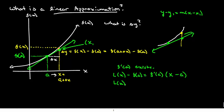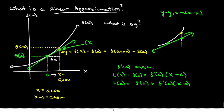If I go ahead and move that term around and solve for my y value, I get L(x) equals f at a plus f prime at a times (x minus a). And x minus a is delta x — because if x equals a plus delta x, then x minus a equals delta x. So you may see it written as: L(x) equals f(a) plus f prime at a times delta x.